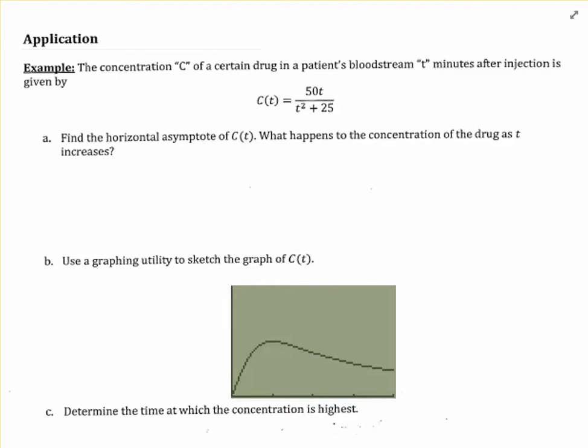And in Part A, what we want to do is use that function to find the horizontal asymptote. And then we'll interpret it, what happens to the concentration of the drug as t increases. Well, as we've been doing all along, to find the horizontal asymptote of a rational function, we have to compare the degree of the numerator and the degree of the denominator with each other.